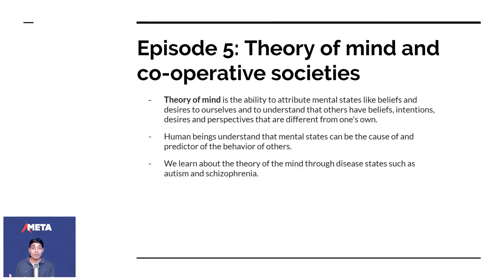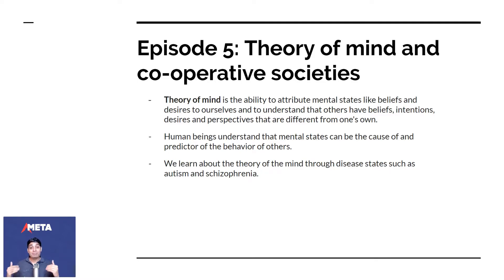When you like a potato, there's a possibility that another person could like tomatoes. Human beings understand that mental states can be the cause of and predictor of behavior of other people. We learn about the theory of mind through disease states such as autism and schizophrenia.